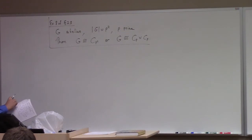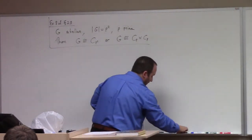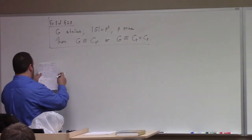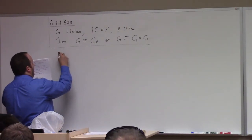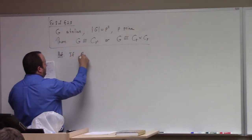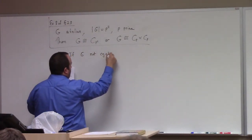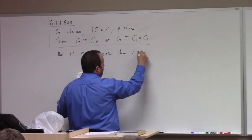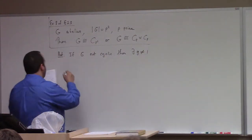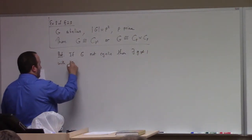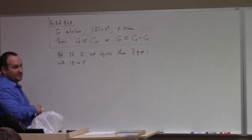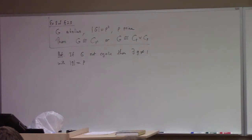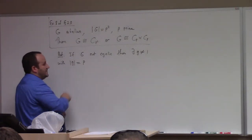So here's the proof. If G is not cyclic, then there exists g not equal to 1 with order of g equal to p. By Lagrange's theorem, the only possible orders of elements are 1, p, and p squared. p squared's out because G is not cyclic, so this is by Lagrange's theorem. There has to be an order-p element g.